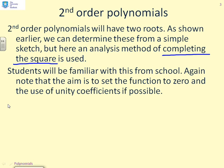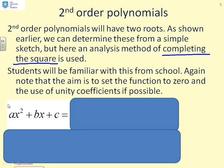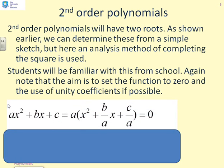But what we want to do now is look at an analysis method, which is a bit more efficient and quicker. And the method that you probably did at school was called completing the square. Again, we note that the aim is to set the function to zero and the use of unity coefficients where this makes sense. So, let's have a look at a polynomial of the form ax squared plus bx plus c. Now, at the moment, you'll notice that the coefficient of the x squared is not 1. So, the first thing we do is take the a out of the brackets and rewrite the polynomial as x squared plus b over a times x plus c over a equals 0.